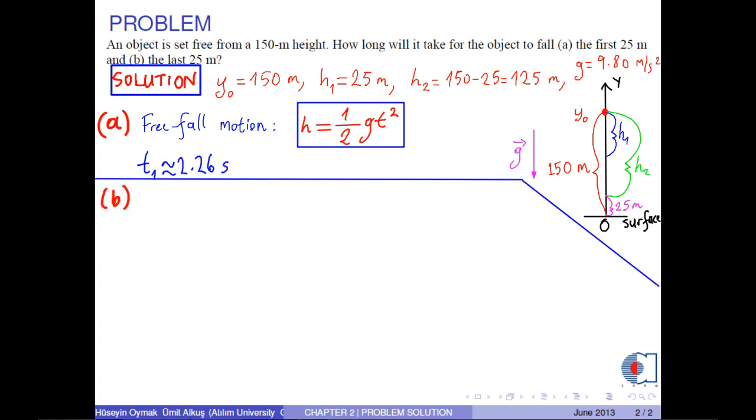For part b, let's find the time taken to reach the ground. Therefore, t becomes square root of 2h over g.